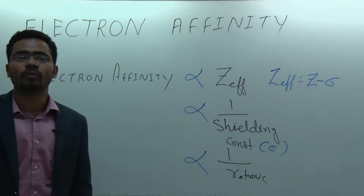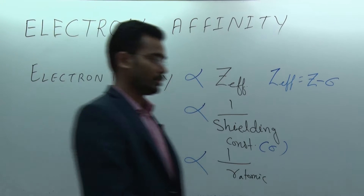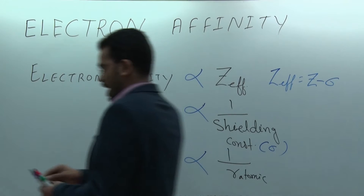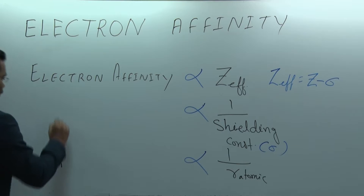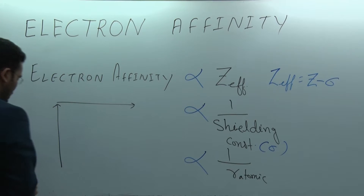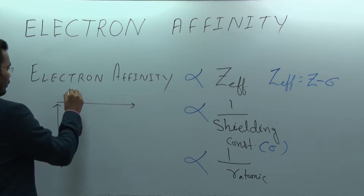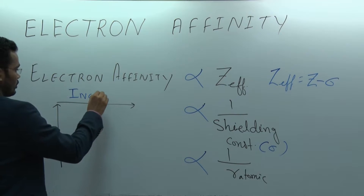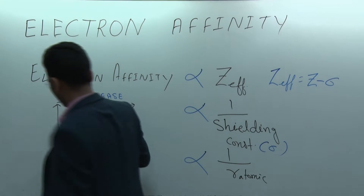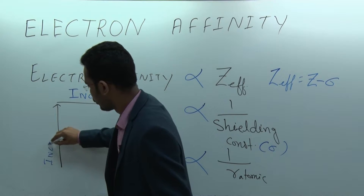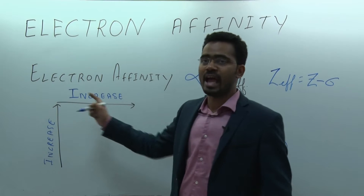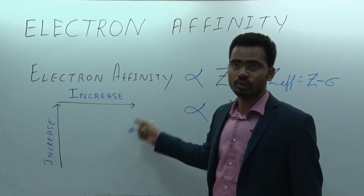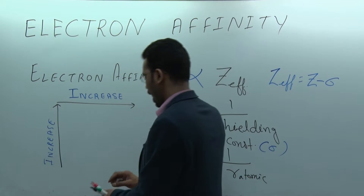What is the general trend of electron affinity? The general trend for electron affinity is similar to ionization energy — it increases from bottom to top and increases from left to right in the periodic table.